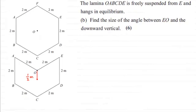Hi there. Now if you watched the previous part of this question, we were asked to find the distance of the centre of mass of this lamina, OABCDE, from O. And we found out that it was half a metre from O, lying on this line OC. Now for this question, we're told that the lamina OABCDE is freely suspended from the point E and hangs in equilibrium.